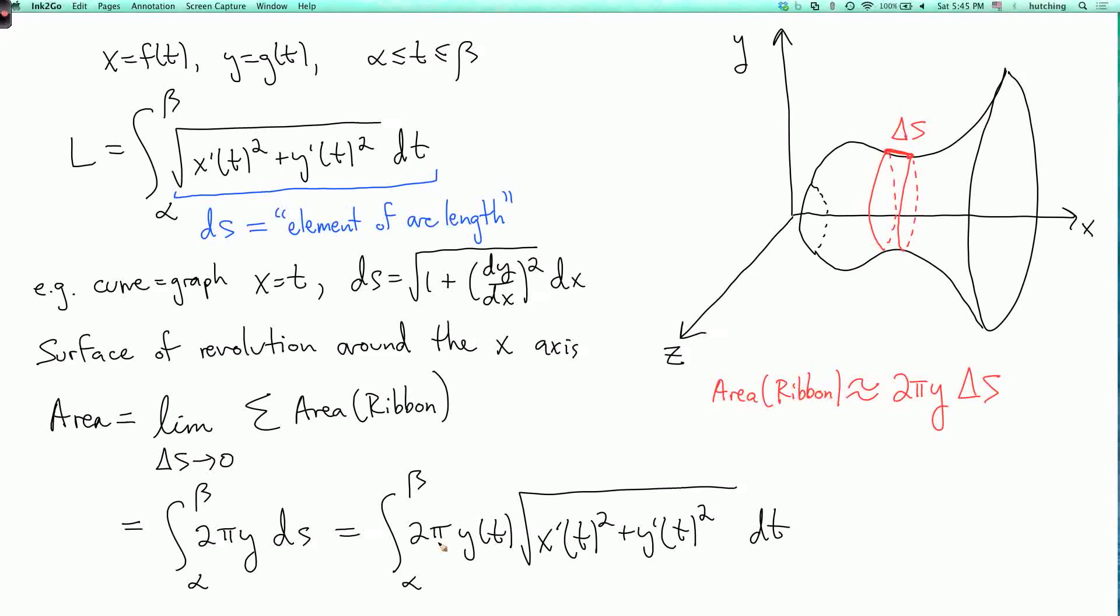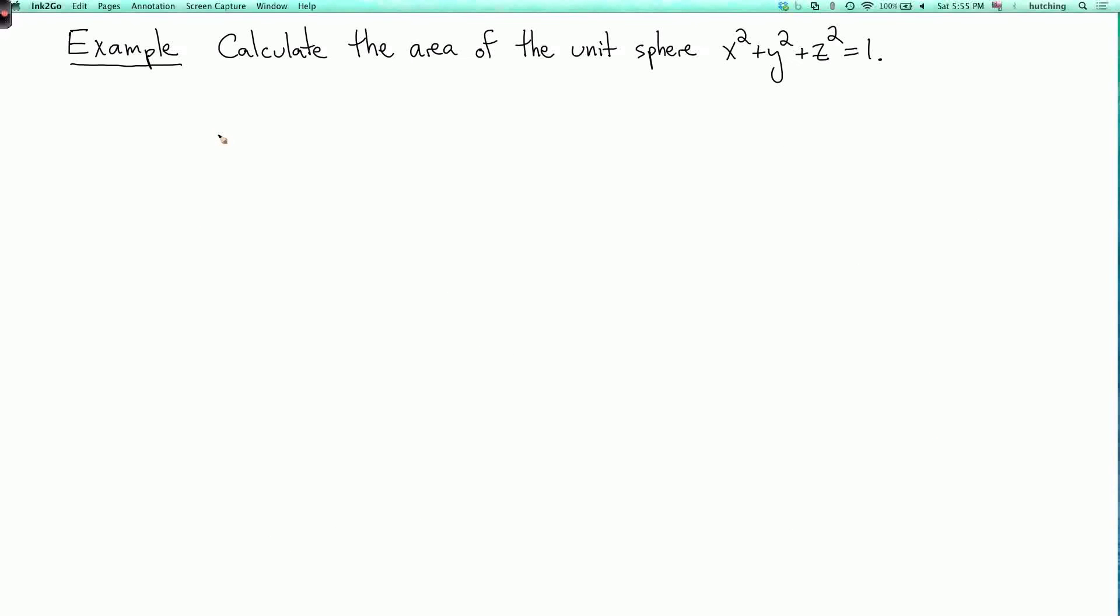Let's do an example. So let's calculate the area of the unit sphere x squared plus y squared plus z squared equals one. So you may know that the answer is equal to four pi. But let's do it using this method to make sure it works. There's actually a little pitfall, as you'll see. So how can we think of the unit sphere as a surface of revolution?